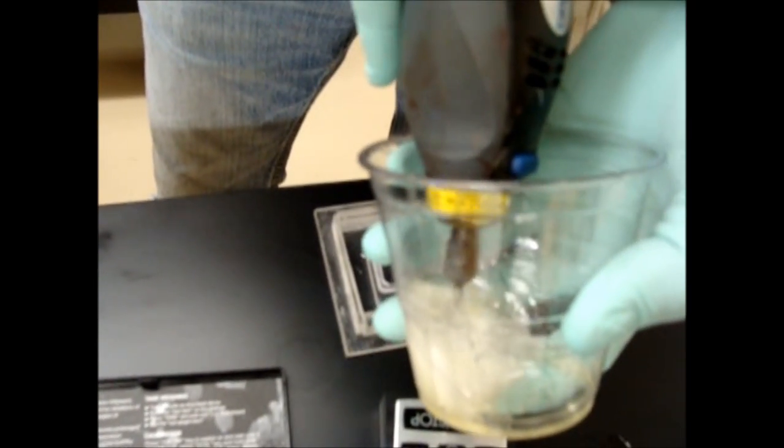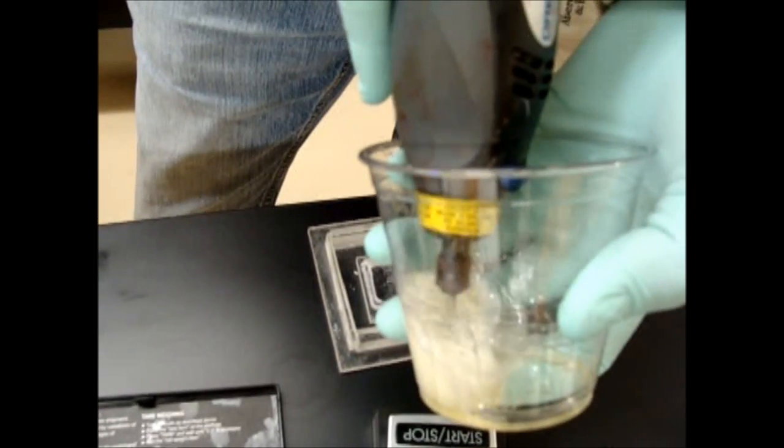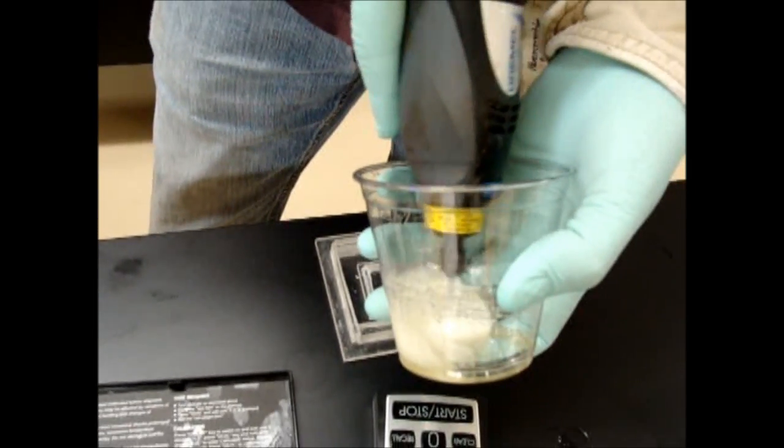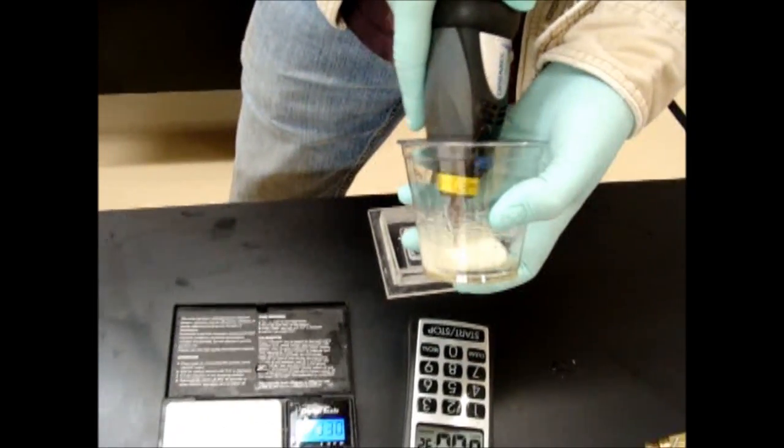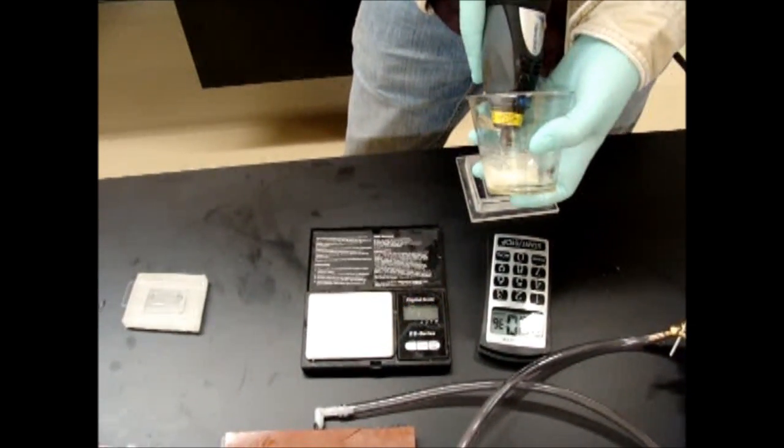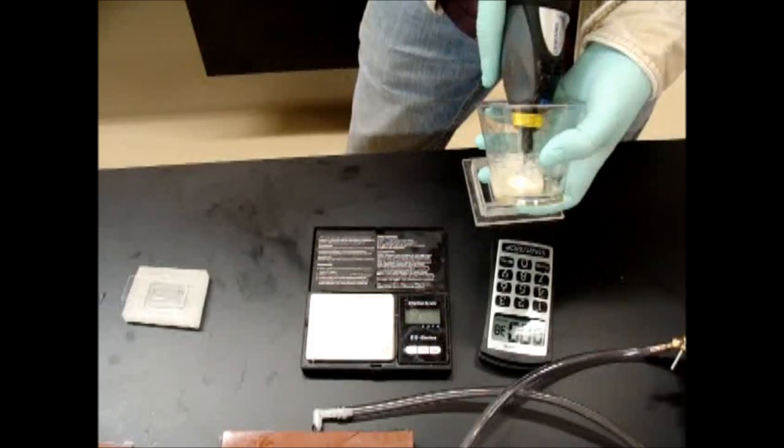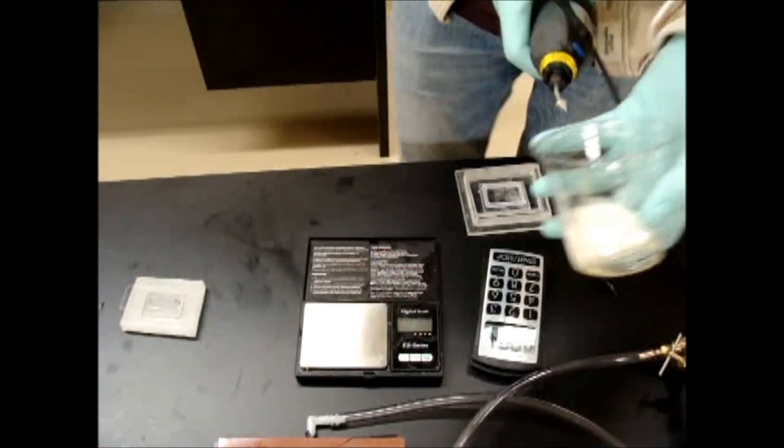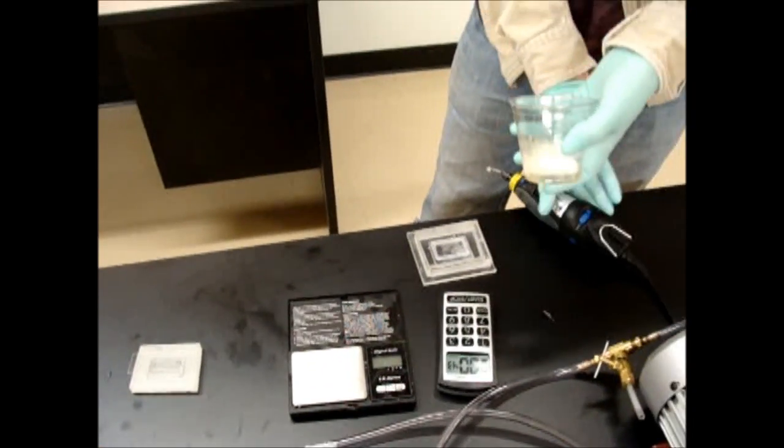I'm mixing this with a Dremel tool and a bent screw, just making sure I don't nick the sides of the cup. This introduces a lot of air, but the process we're going to be doing is vacuuming the air out, so we're not too concerned with that.